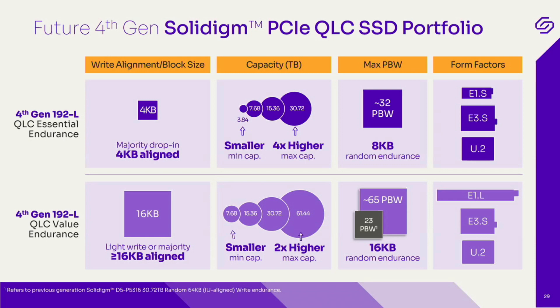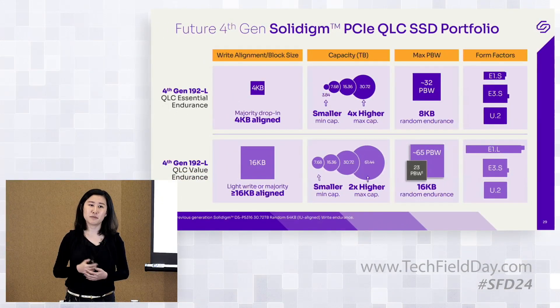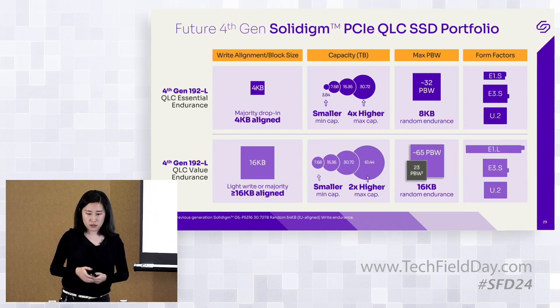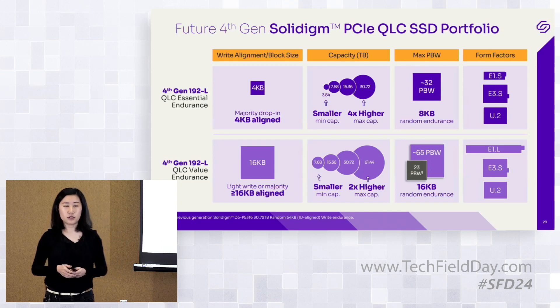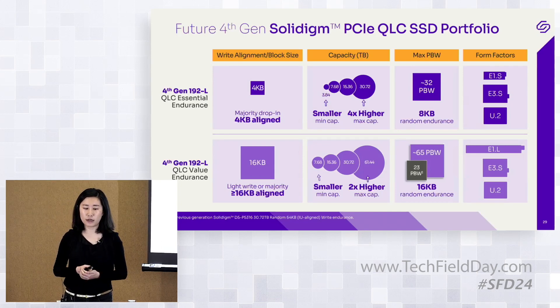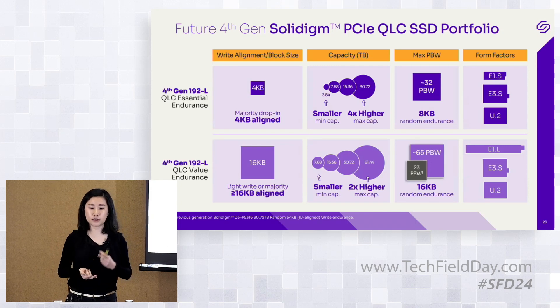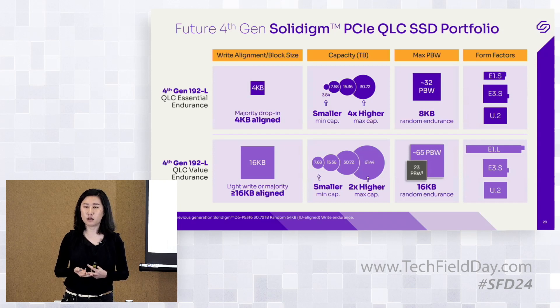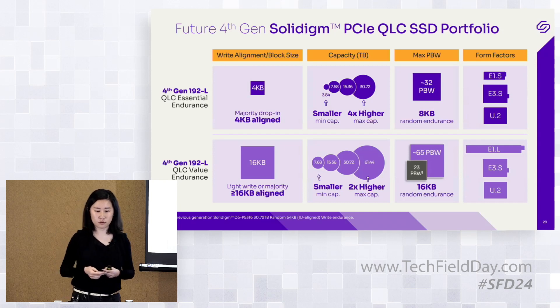The best way to write to a drive is sequentially, and the second best is to have IU-aligned writes. For Value Endurance, there are three form factors as well: E1.L, E3.S, and U.2. E1.L, E3.S, and E1.S are all the so-called EDSFF or ruler form factors.